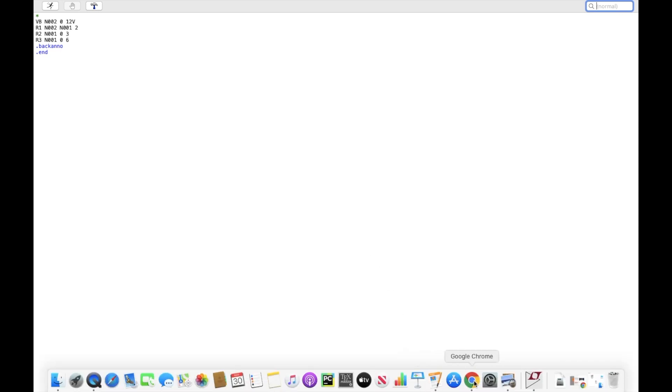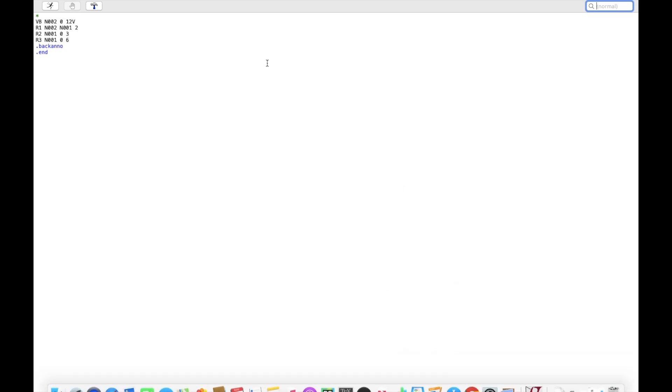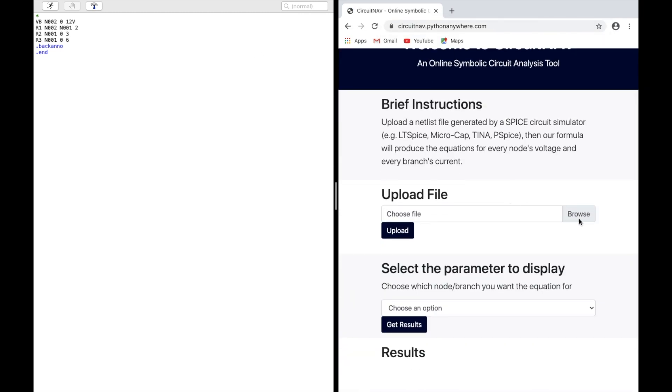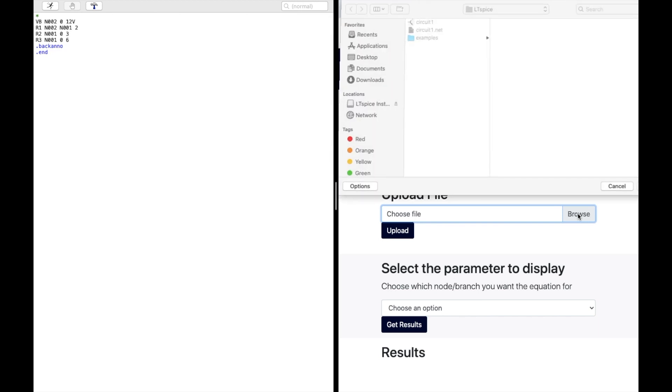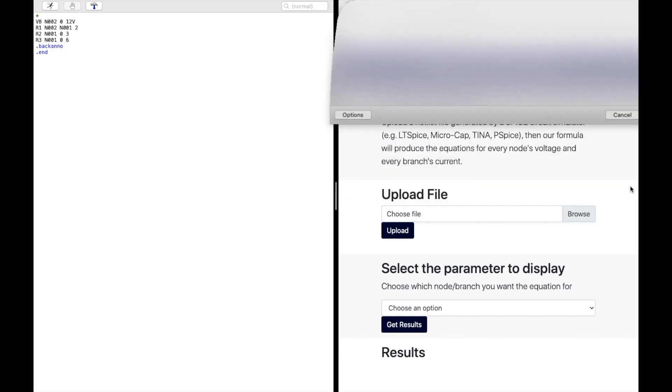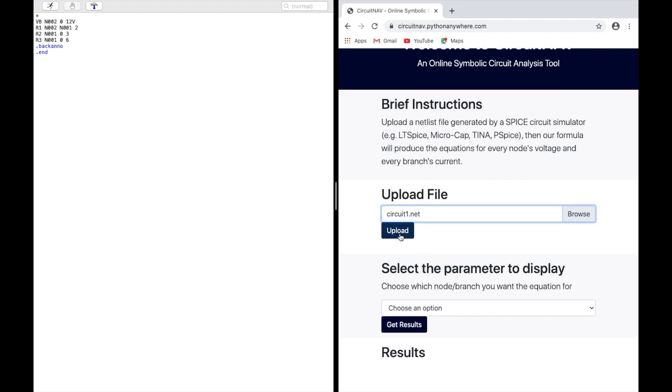Now, we're going to head over to the website. The web address is circuit-nav.pythonanywhere.com. I'm going to go ahead and browse for the netlist that we just created. Circuit1.net. Open it. Upload.